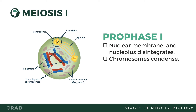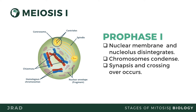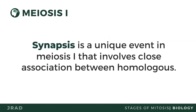Centrosomes move away from each other towards the opposite poles of the cell, and the spindle fibers form between the centrosomes. This is where synapsis and crossing over occurs. Synapsis is a unique event in meiosis 1 that involves close association between homologous chromosomes — homologous chromosomes pair and intertwine.